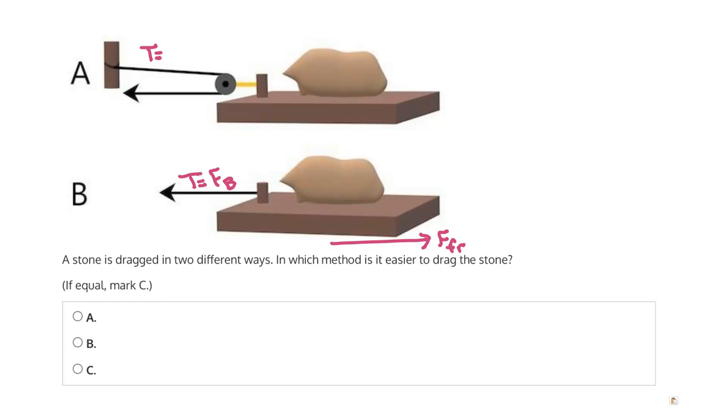So the applied force in B divided by two. This means it will require less force to drag the stone in A as compared to B. Therefore, it will be easier using method A, which is our correct answer.